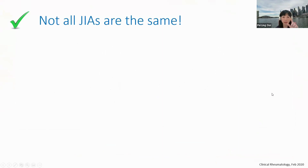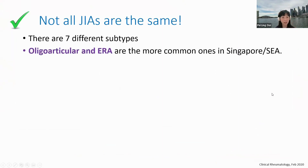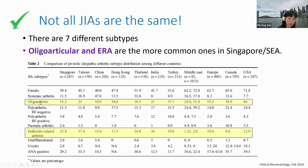Most of you already know there are seven subtypes of JIA. Oligoarthritis and enthesitis-related arthritis (ERA) are the more common ones in Singapore and Southeast Asia, whereas overseas it's oligoarthritis and polyarticular subtypes that are more common. Here in Singapore, 30% are oligoarthritis and another 30% are ERA, making up about two-thirds of all arthritis cases, whereas in the Caucasian population it's oligoarthritis followed by polyarthritis RF-negative subset.